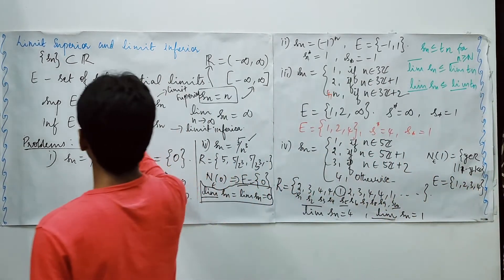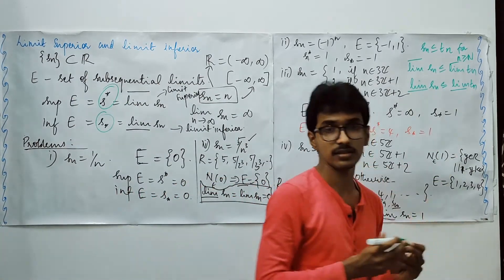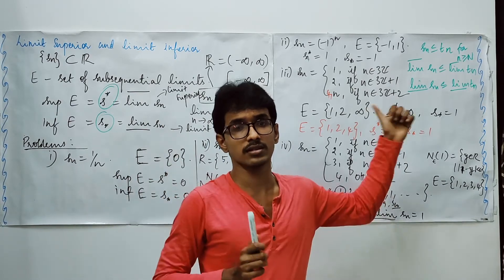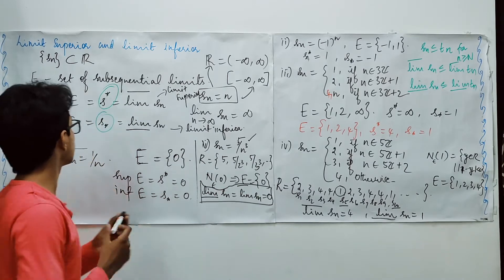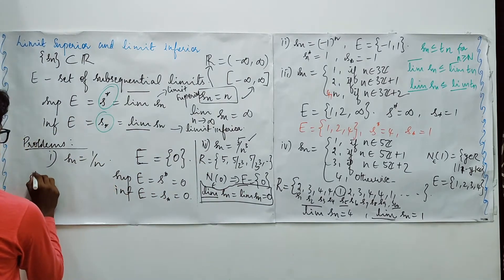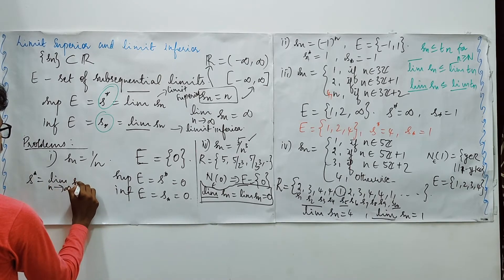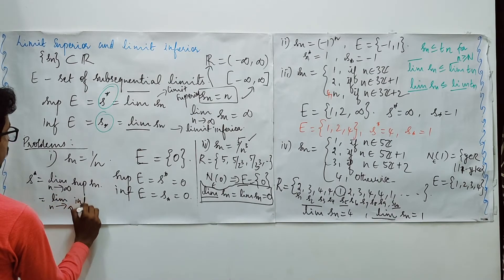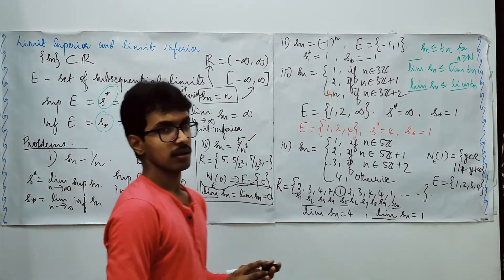Here I have defined things with the help of S upper star and S lower star. These are some notations — some authors follow this notation and some follow another. Some may also write S upper star as lim_{n→∞} sup Sn, and S lower star as lim_{n→∞} inf Sn.